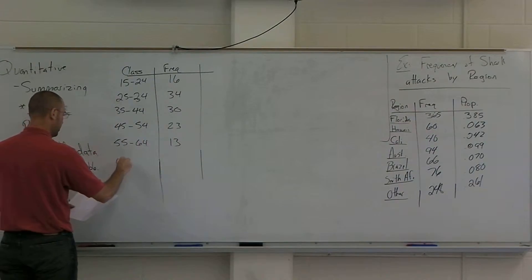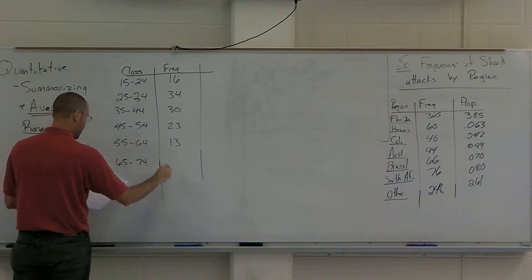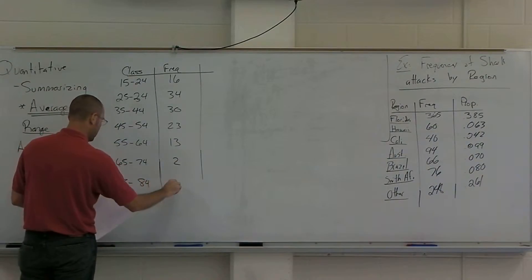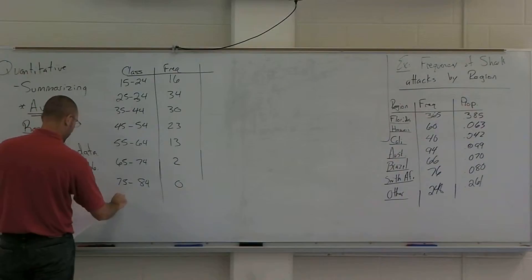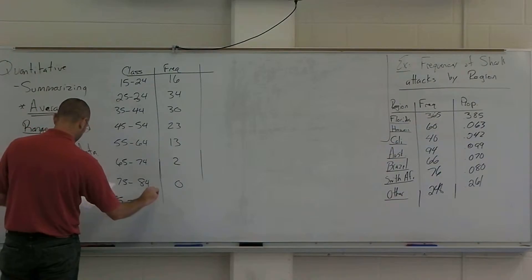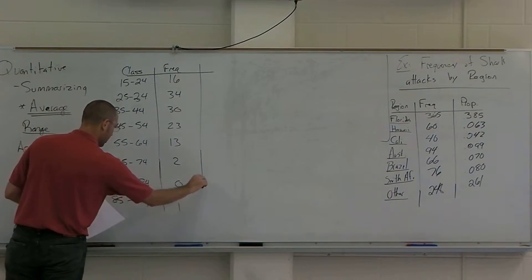Between 45 and 54 there were 23. 55 and 64 there were 13. 65 to 74 there were 2. 75 to 84 there were 0. 85 to 94 there were 31.